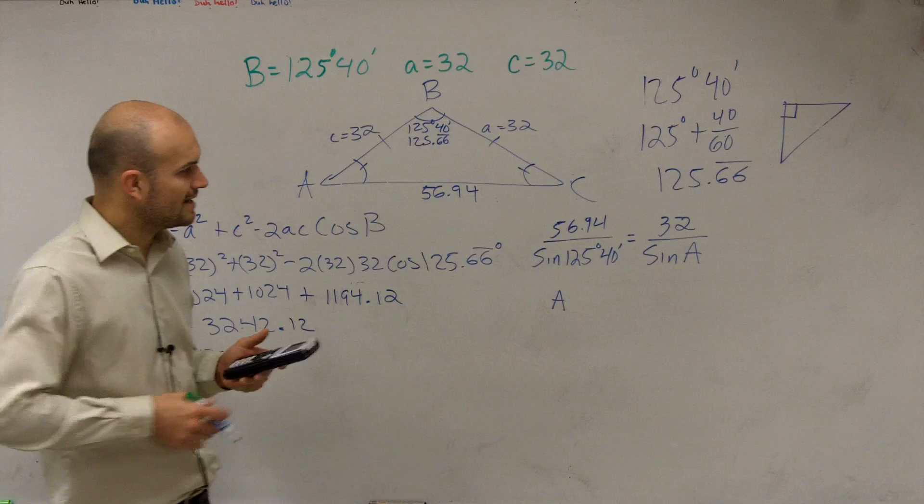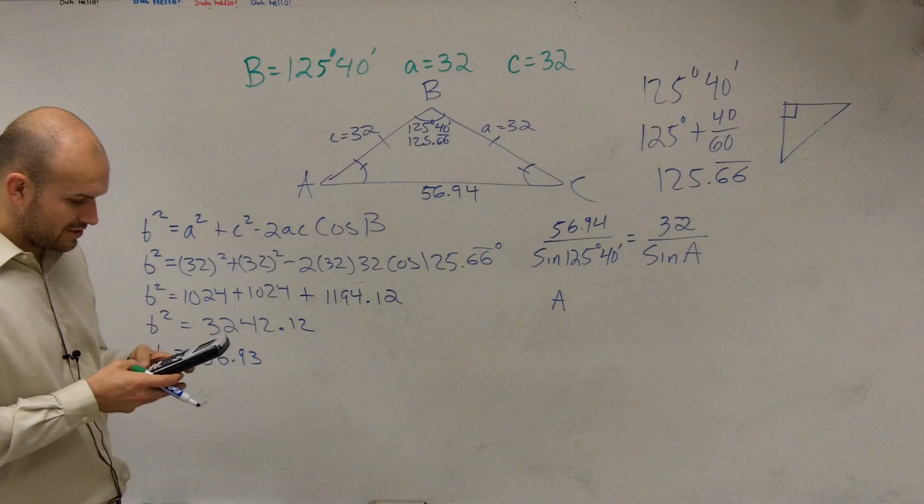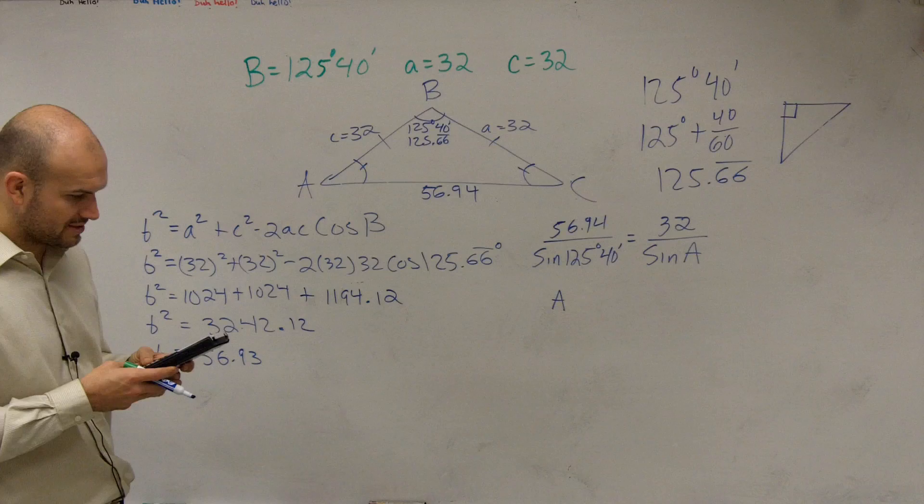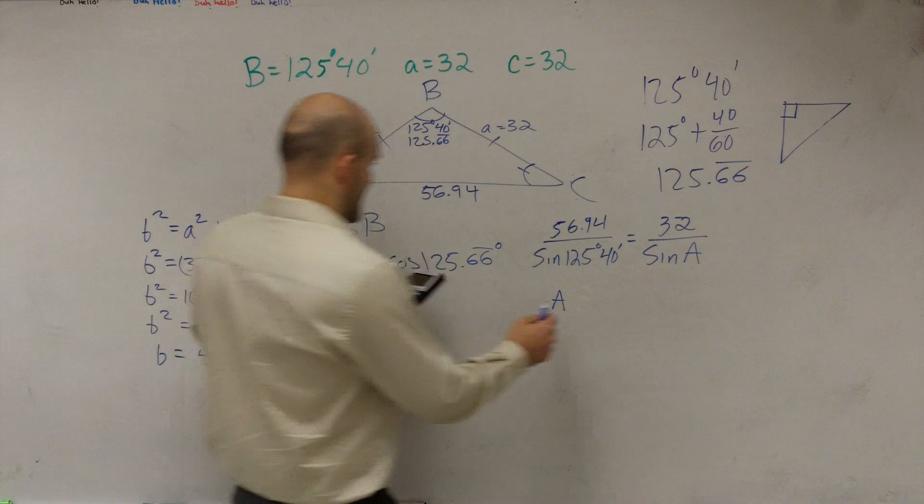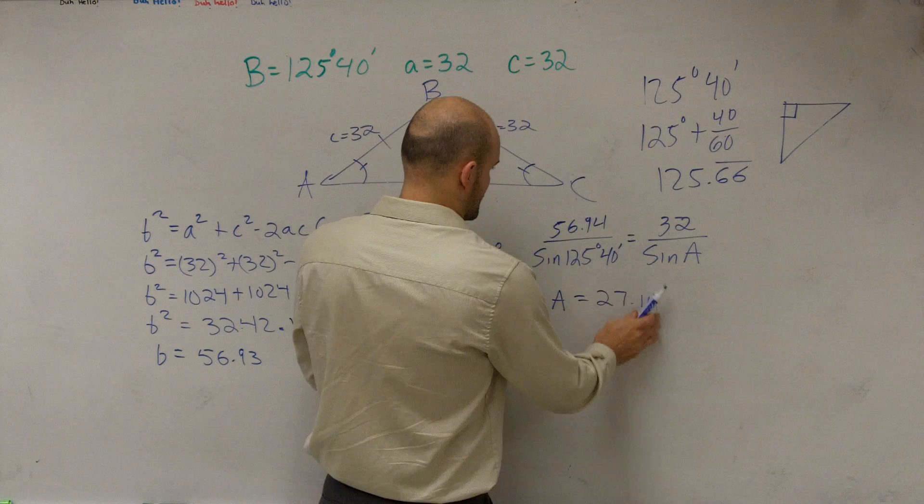So rather than even right now I can speed up the process, I could do 32 times the sign of 125.6, then divide that by 56.94, then take the inverse sign of that answer, and I have a equals 27.16 or 1.2 or 1.7.